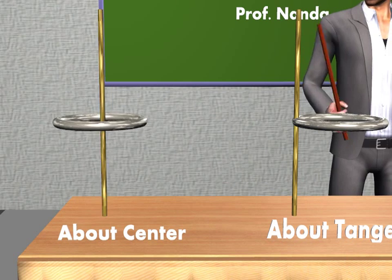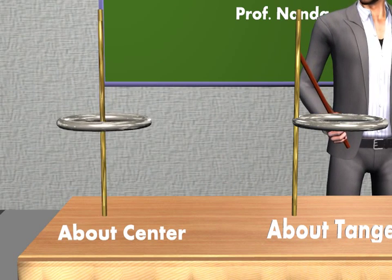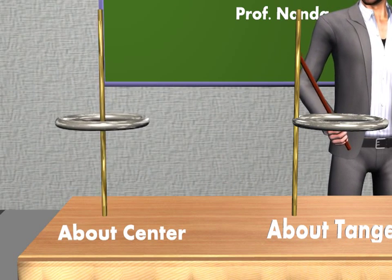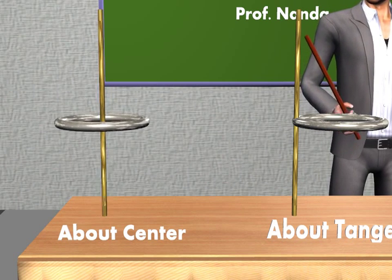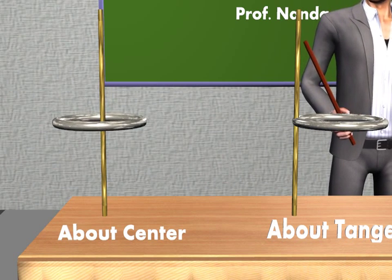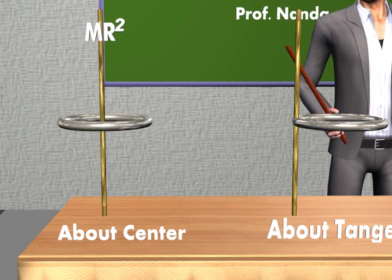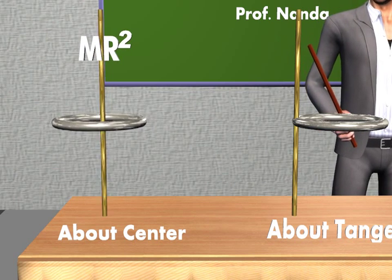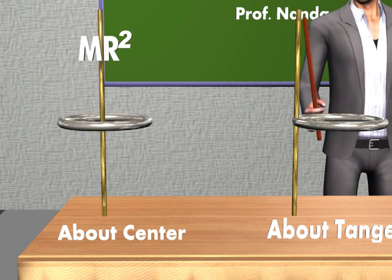Case 1: this is the rotation of a ring about its central axis. Its Moment of Inertia is given by mR square.